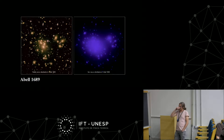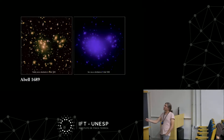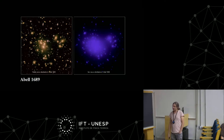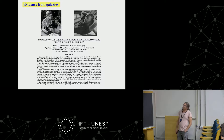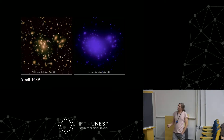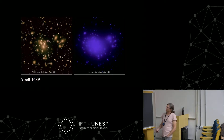Dark matter is not rare — on the contrary, it is quite abundant, at least in galaxy clusters. This is the evidence we have at the moment from galaxy clusters.